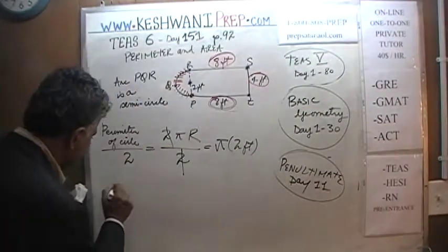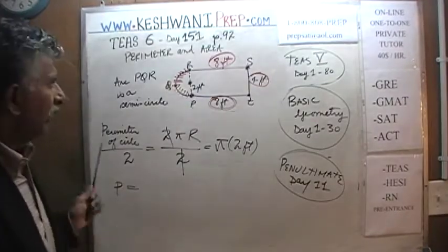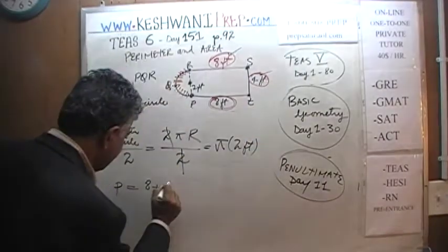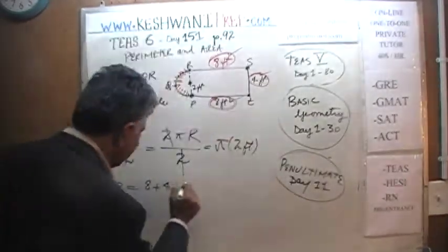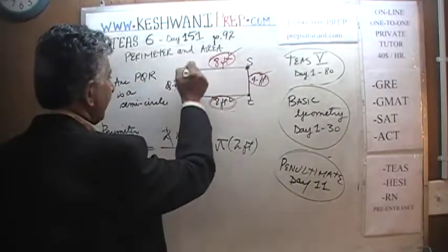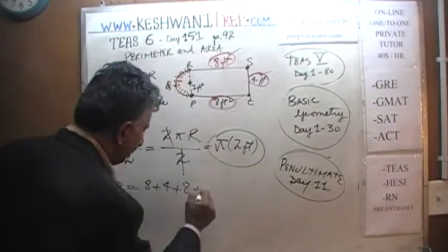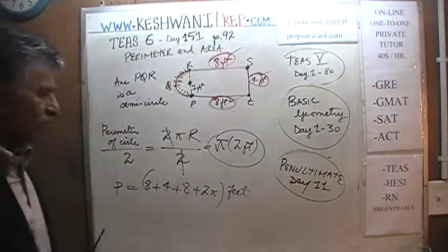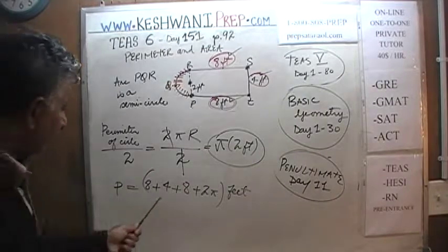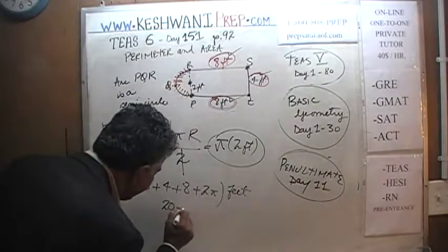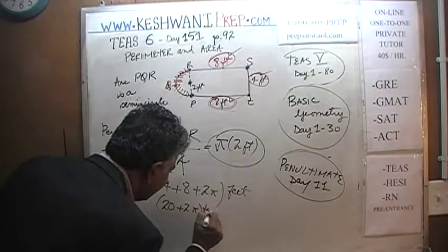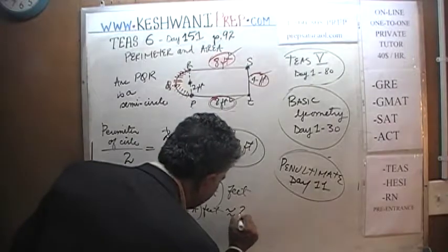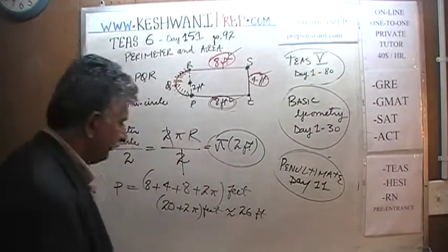Now we can figure out the entire perimeter. The perimeter of this picture is, let's go clockwise, 8 feet, 4 feet, 8 feet, and finally, the perimeter of this guy, which we just found out, was 2 pi feet. This is your answer. 8 plus 8 is 16, 16 plus 4 is 20, so it's 20 plus 2 pi feet. We can leave it like this if you want to, or we can say it is approximately 26 feet.